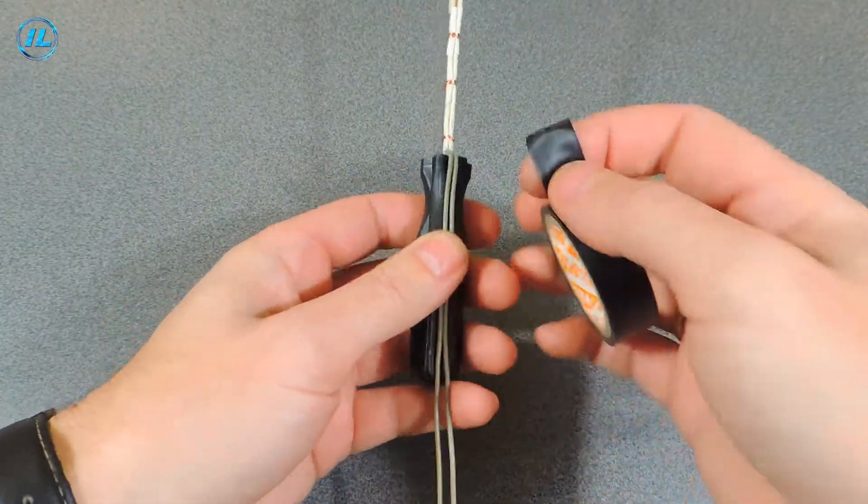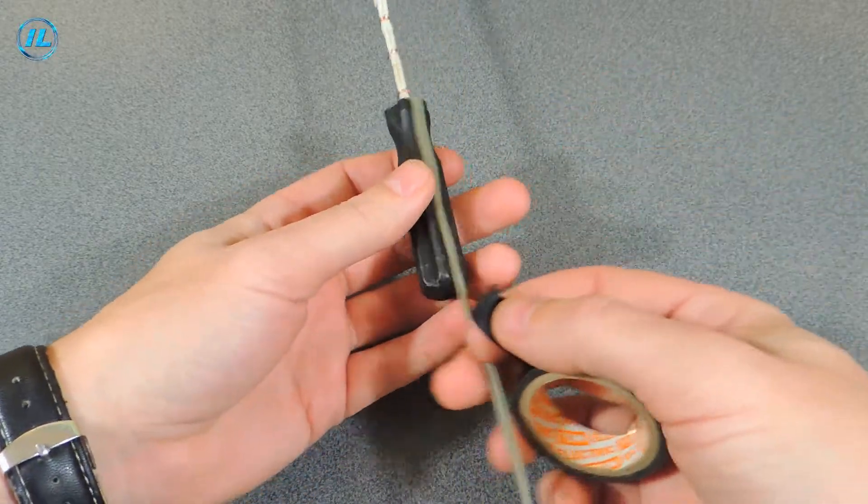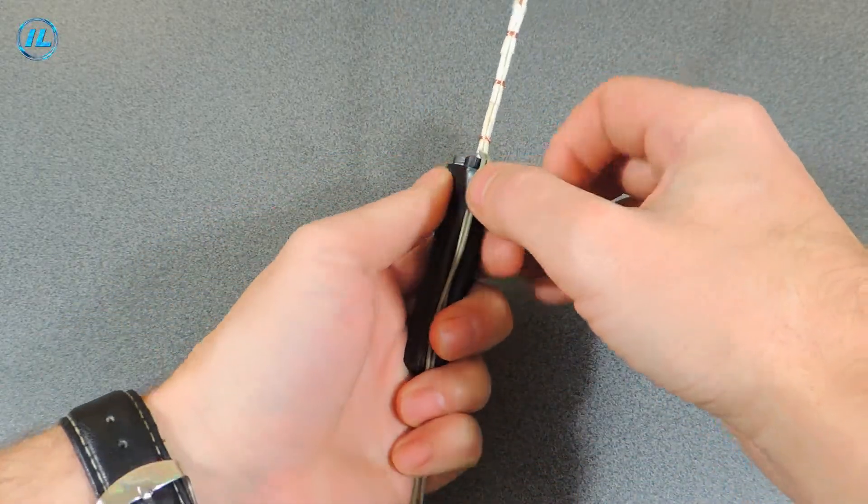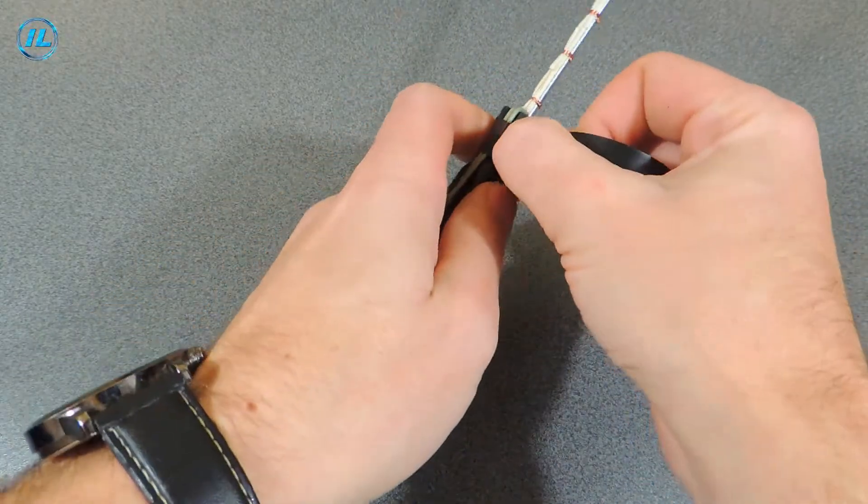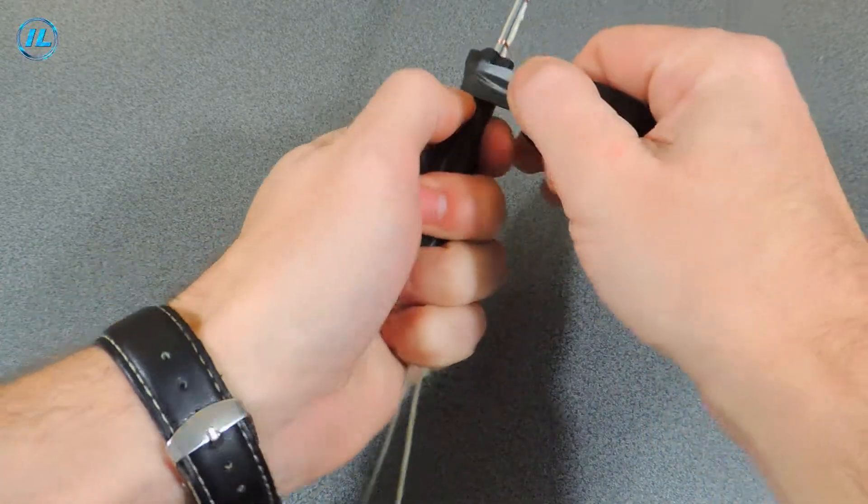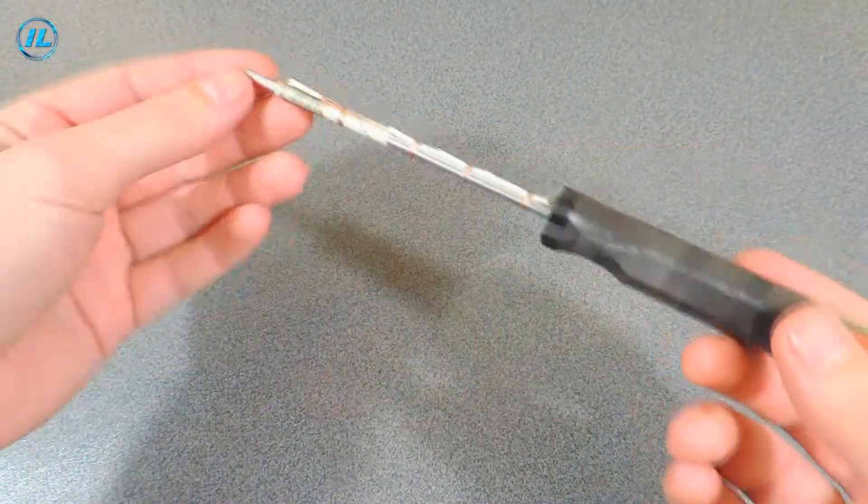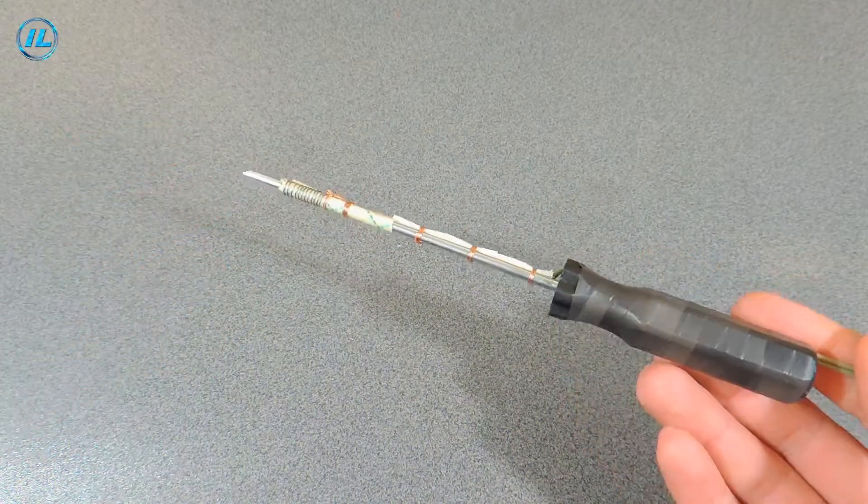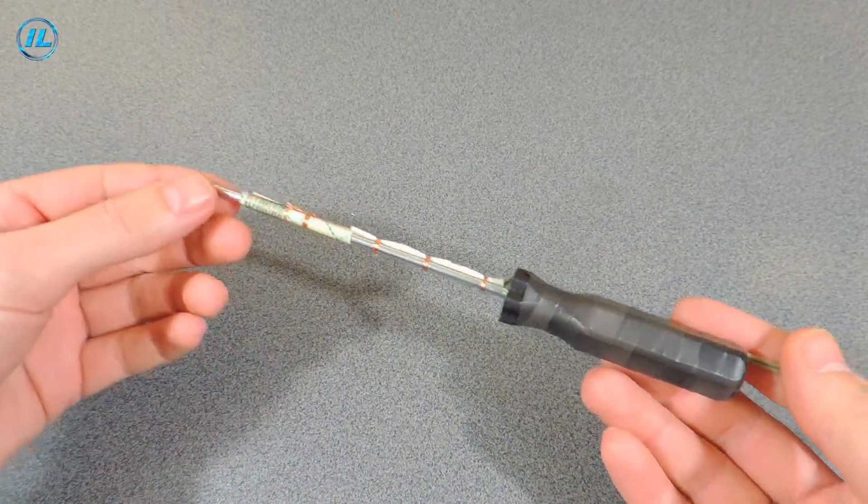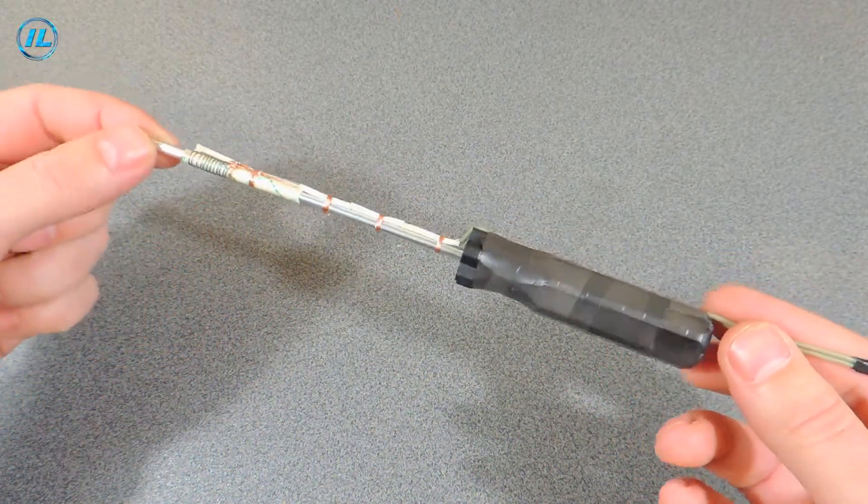At the end of the work, I will rewind the handle with electrical tape so that these wires do not interfere. Well, that's it. A homemade soldering iron from a screwdriver is ready.